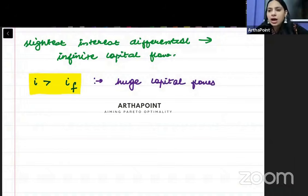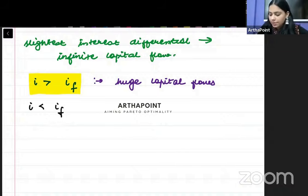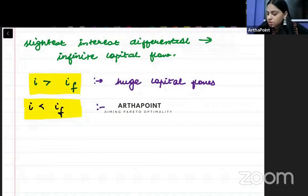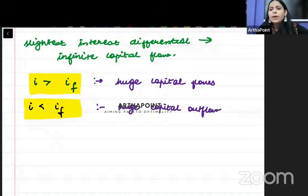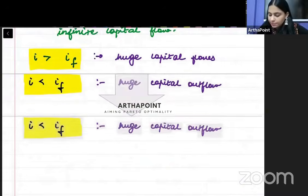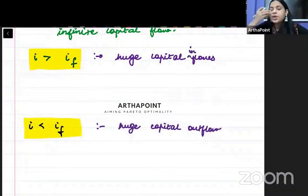Everyone wants to invest in your economy when your interest rate is higher than the foreign interest rate. But if your interest rate (I) is less than the foreign interest rate (IF), nobody wants to invest in your economy — there is huge capital outflow. When there is huge capital inflow, BP (Balance of Payments) equals current account plus capital account.